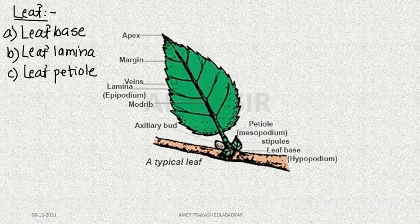The leaf has three main parts: the base of the leaf, the petiole, and the lamina.